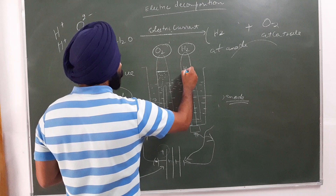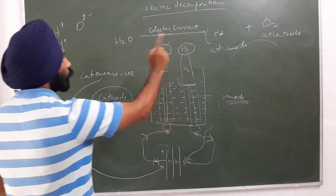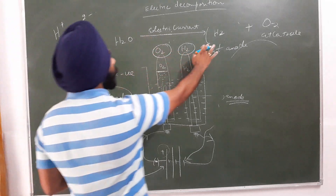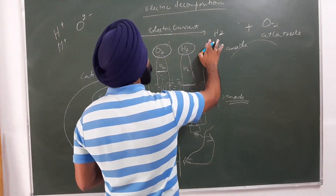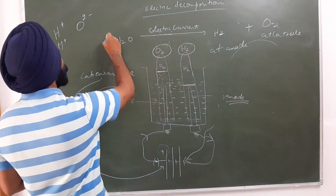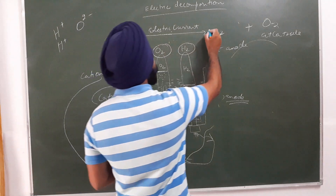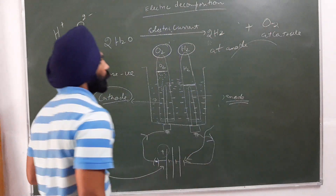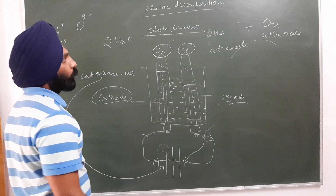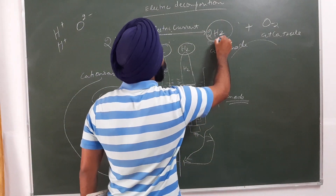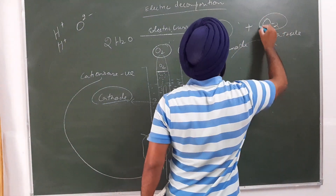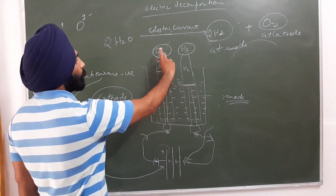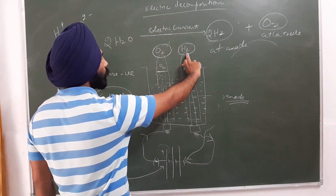The balanced equation for electrolysis of water is: 2H2O → 2H2 + O2. This means hydrogen gas produced is double the amount of oxygen gas. The water level in the test tube at the cathode goes down more, because hydrogen gas is collected in double the amount compared to oxygen gas.